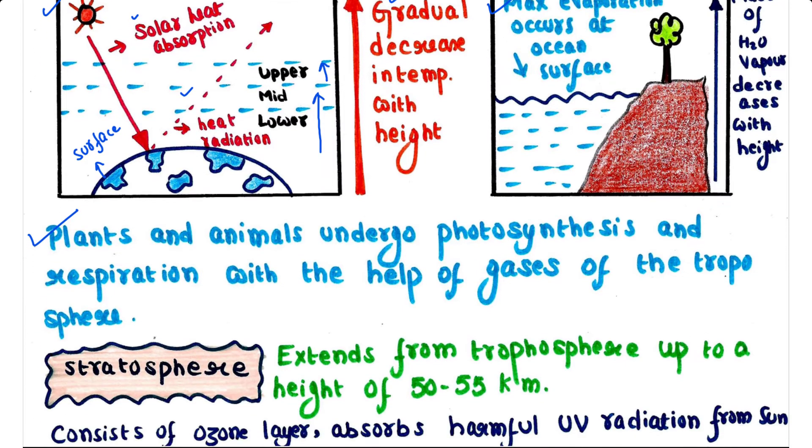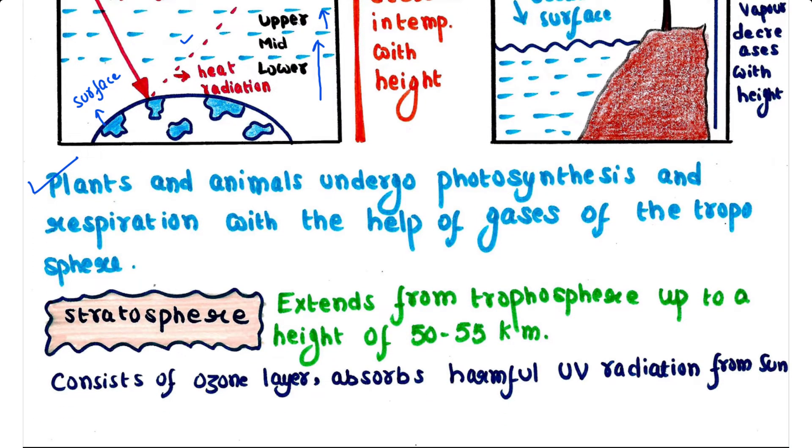After troposphere comes stratosphere. Stratosphere extends from the troposphere up to a height of 50 to 55 kilometers. It consists of ozone layer, that is very important because it absorbs harmful UV radiation from the sun.